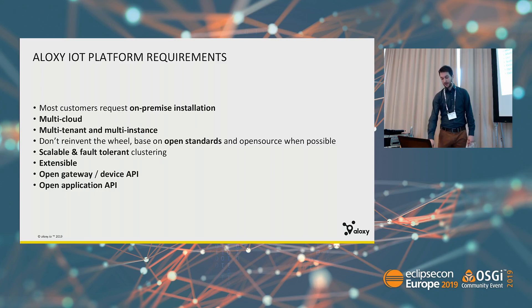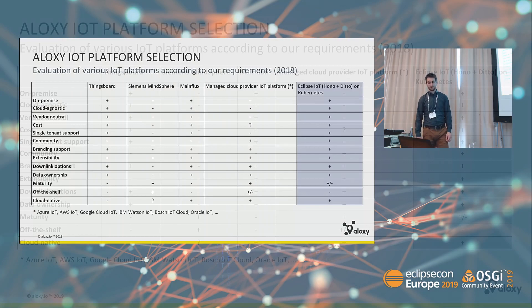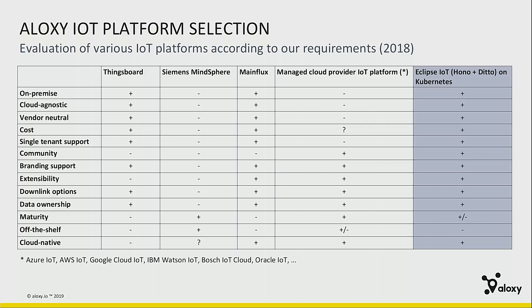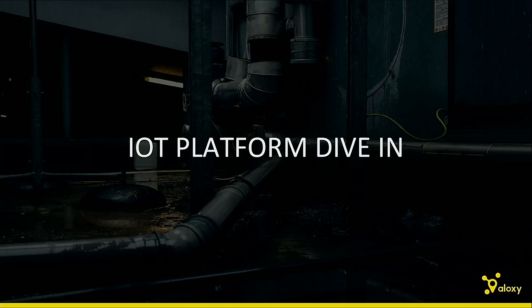This is a comparison of some IoT platforms. As I said, the on-premise line is the first and most important filter — Siemens Mindsphere and managed cloud providers already fall off the list. ThingsBoard and MainFlux were on the list but fell short on maturity and off-the-shelf capabilities. That's the reason why we came to Eclipse IoT, and within Eclipse IoT we chose HONO, Ditto, and Vorto, and we are very pleased with the choice.